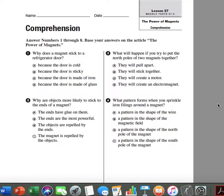Number 2. Why are objects more likely to stick to the ends of a magnet? F. The ends have glue on them. G. The ends are the most powerful. H. The objects are repelled by the ends. I. The magnet is repelled by the objects.